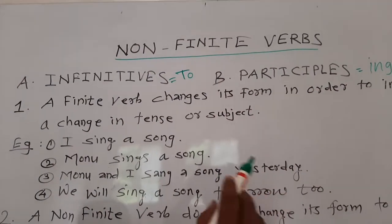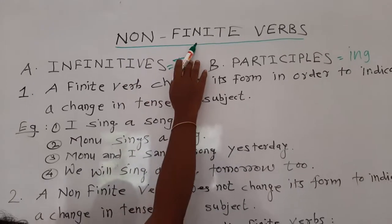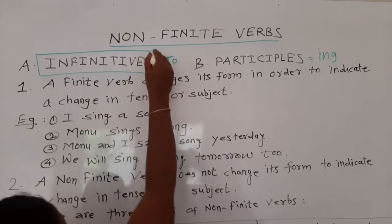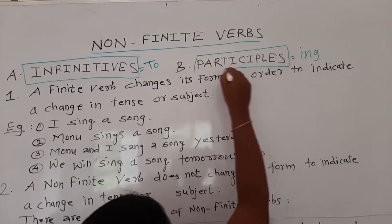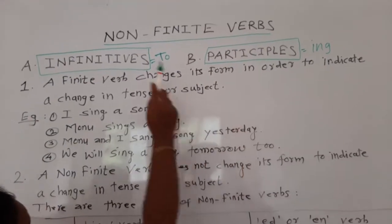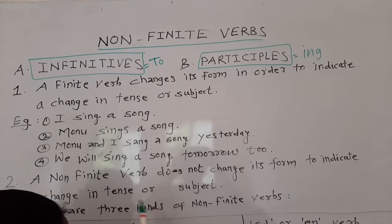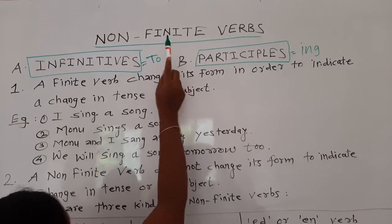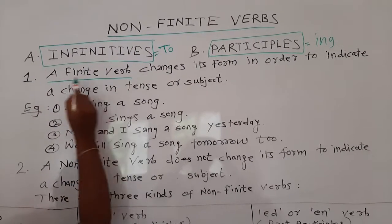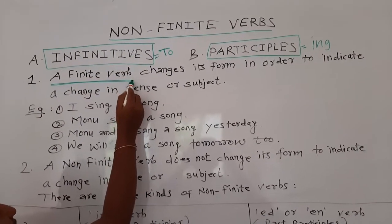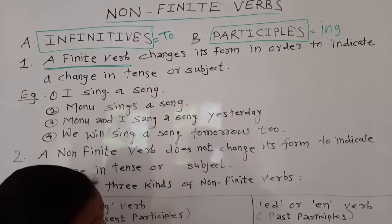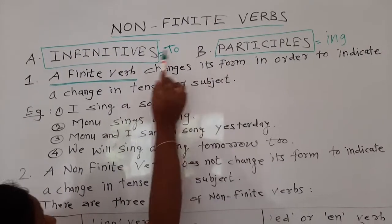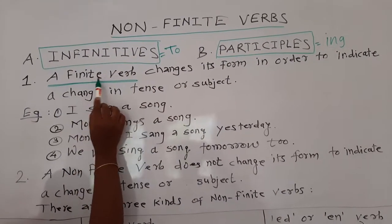Today we are going to learn about non-finite verbs. A non-finite verb is nothing but infinitives, participles — those are what we call non-finite verbs. But before seeing non-finite verbs, let us know about the finite verb first. To know the infinitive and participle, we should have to know about the finite verb first.